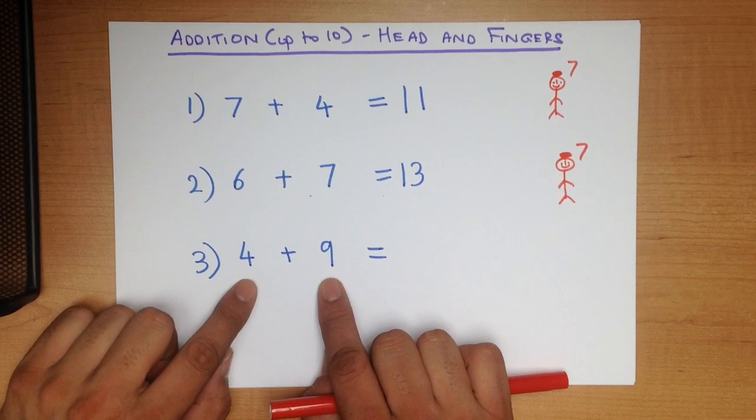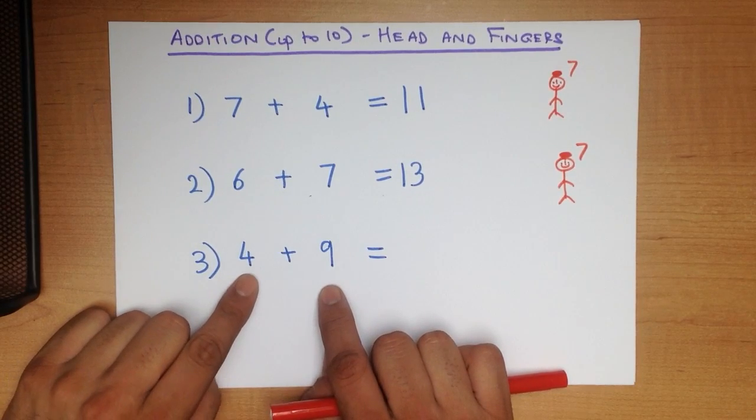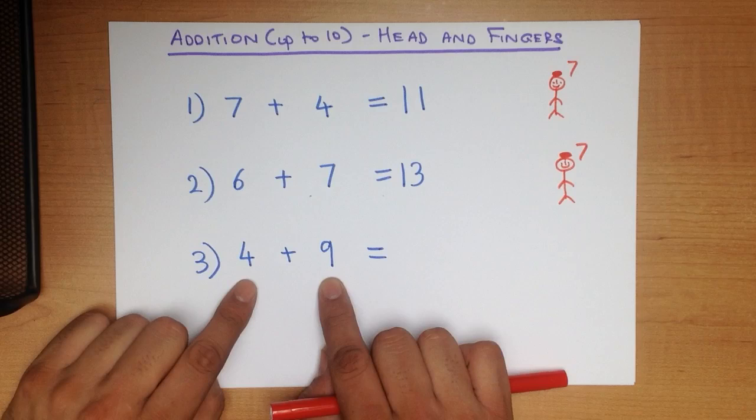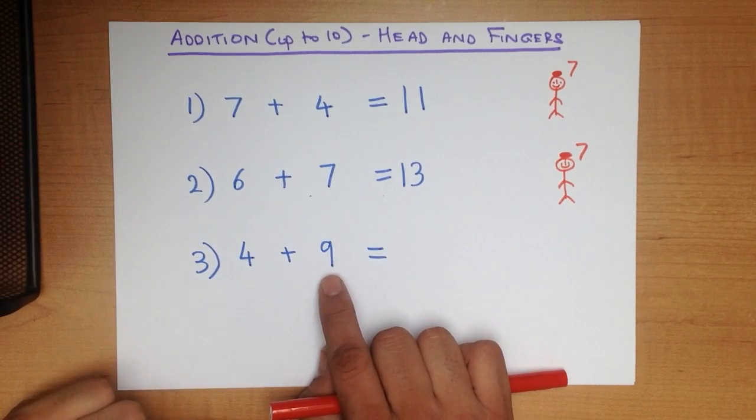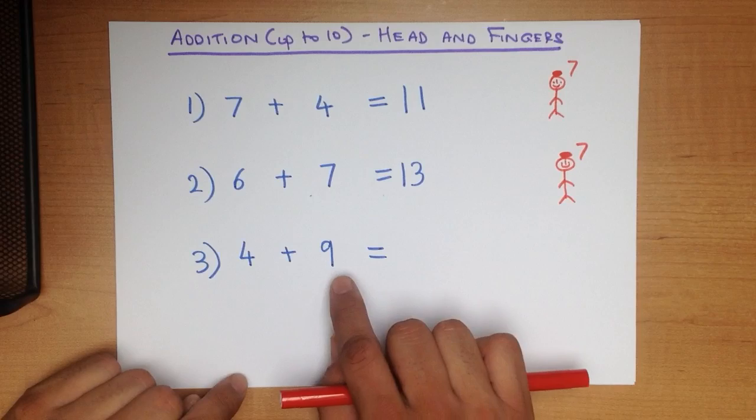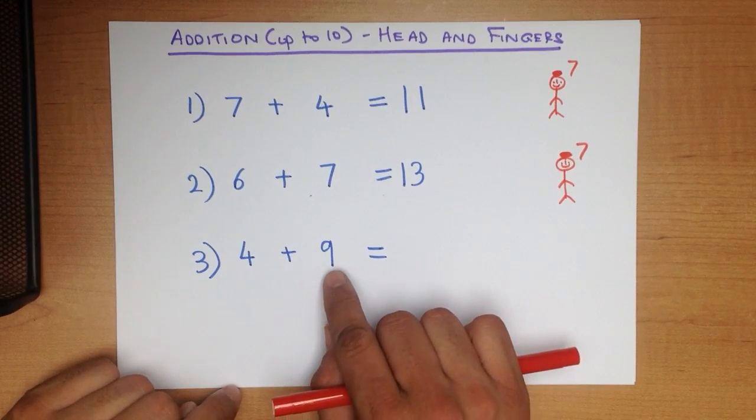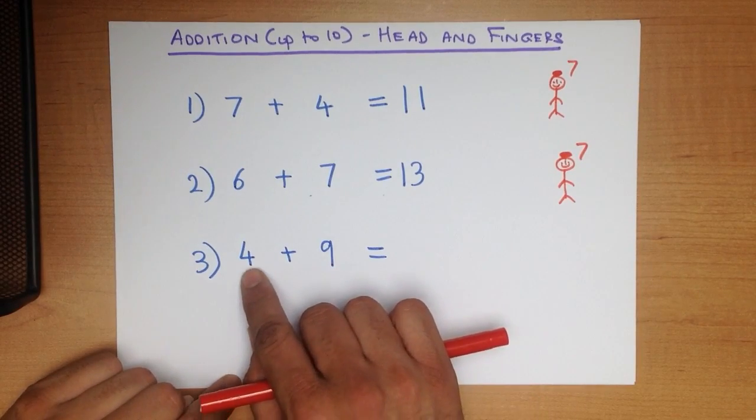Which number of the two do you think is larger? Is it 4 or 9? That's right. 9 is larger. So we are going to say that 9 is on my head.